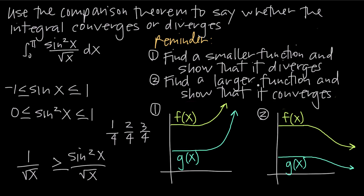So we're going to use 1 over the square root of x as our comparison function. We found a larger function because 1 over the square root of x is always greater than or equal to sine squared of x over the square root of x. Because we found a larger function, if we can show that it converges, then we can prove that this integral also converges. If instead we had found a smaller function, we would need to show that it diverged to prove the original integral also diverged.